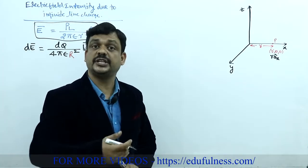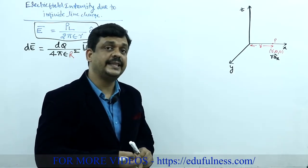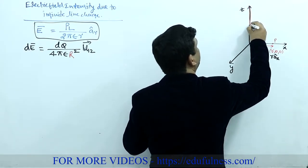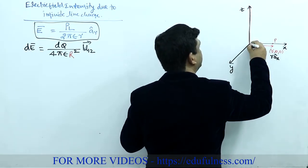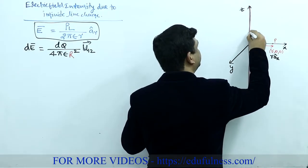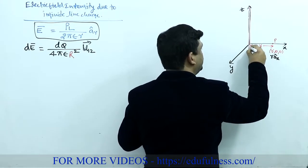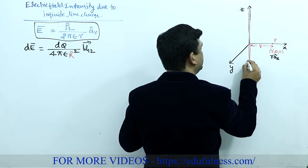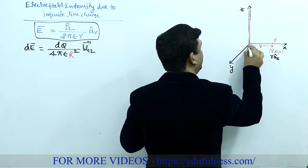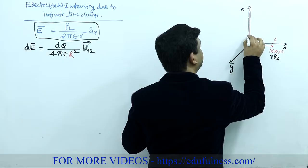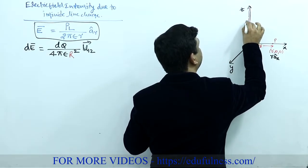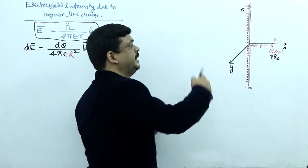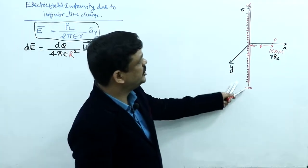Now we place the infinite line charge on the z-axis. The charge is distributed on this line, which extends from minus infinity to plus infinity. This infinite line charge is placed on the z-axis with limits from −∞ to +∞.